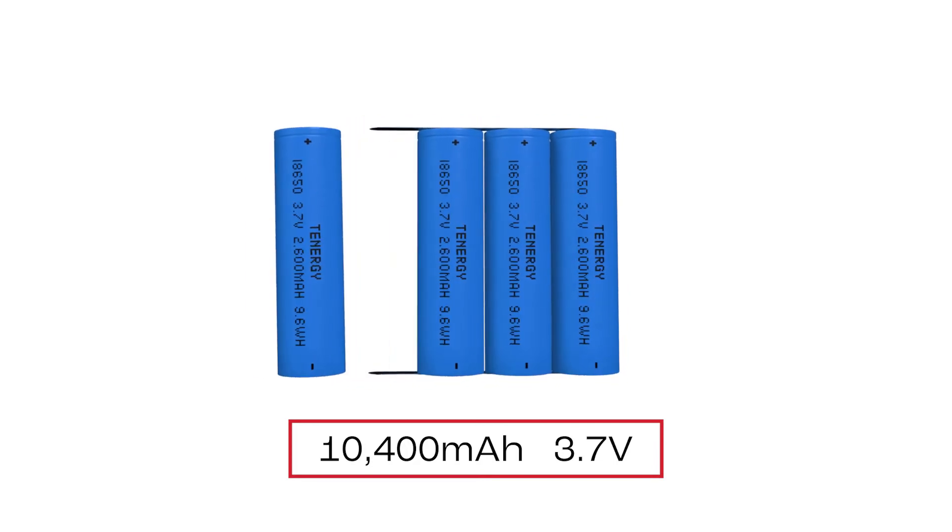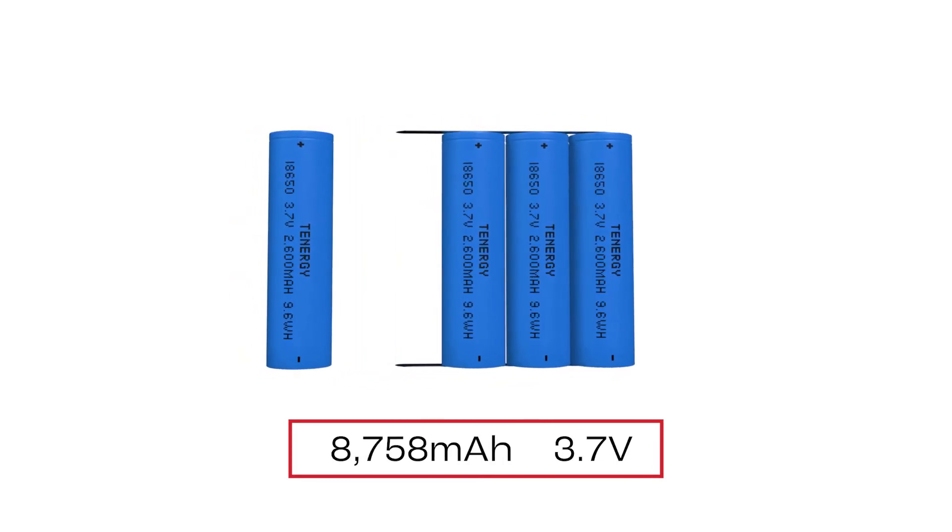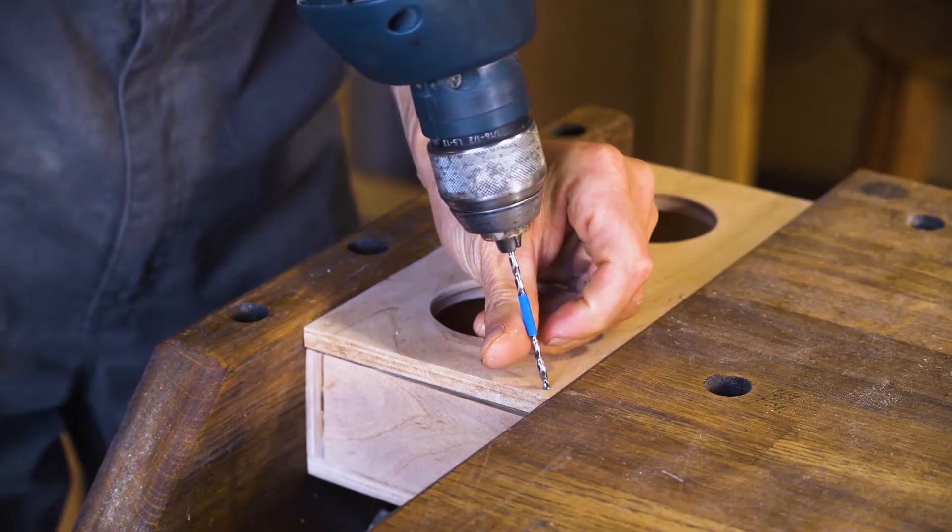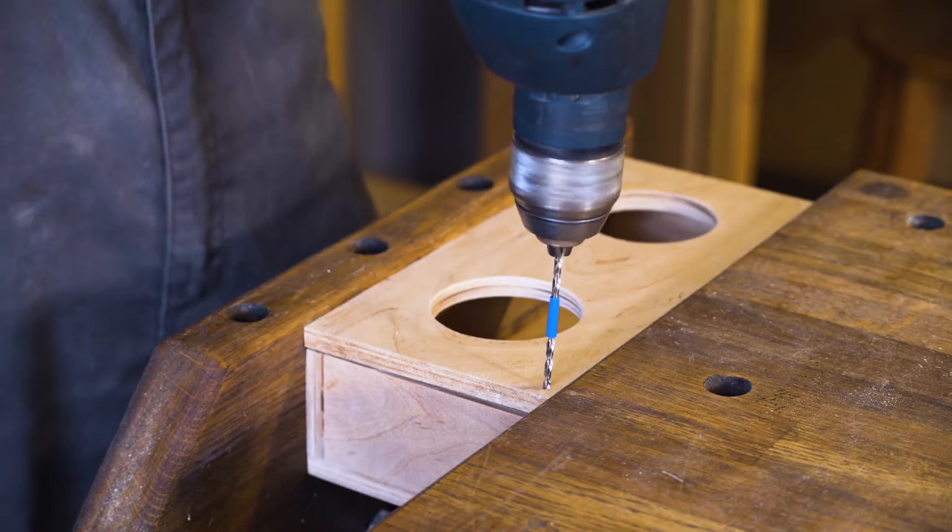If one cell fails or is removed, the total capacity of the battery pack will be reduced instead of the voltage. But the other cells will still be able to provide power which means the battery pack can still keep your application running, just the runtime will be shorter.